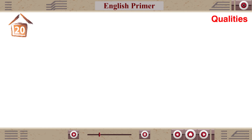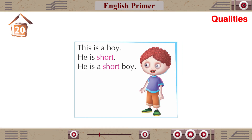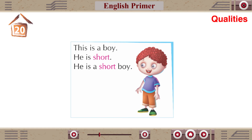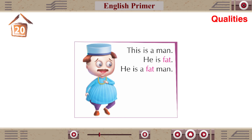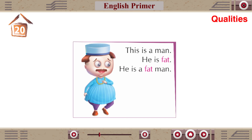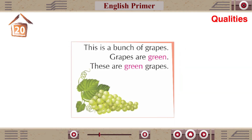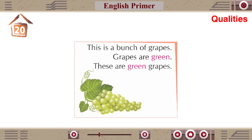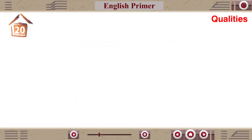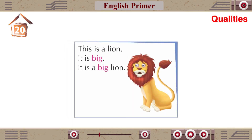Chapter 20: Qualities. This is a boy. He is short. He is a short boy. This is a man. He is fat. He is a fat man. This is a camel. It is tall. It is a tall camel. This is a bunch of grapes. Grapes are green. These are green grapes. This is a lion. It is big. It is a big lion.